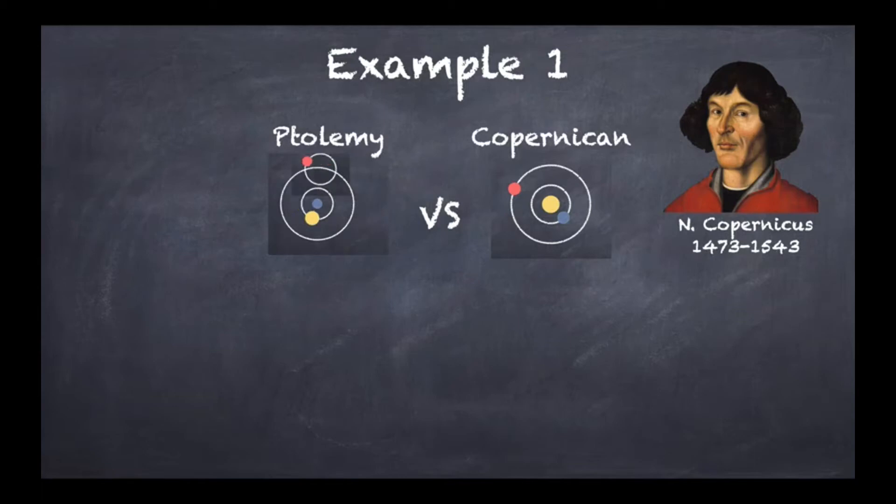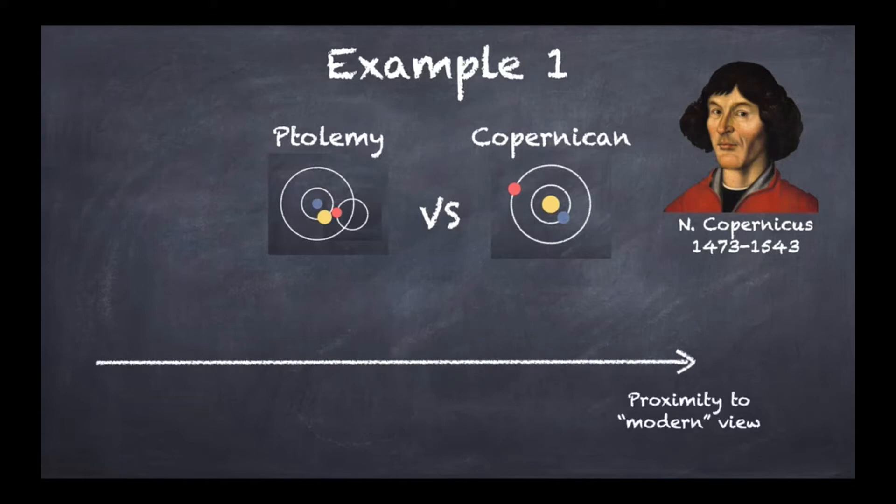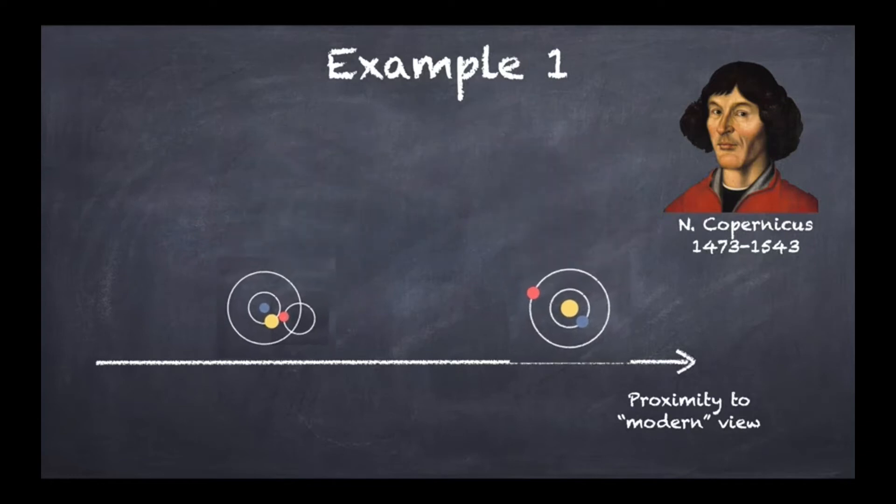The Ptolemaic view was that the Earth was sitting at the center of the universe, and then you would have the sun orbiting around the Earth, and then Mars, for example, would be orbiting along a small circle, and the small circle itself would be orbiting the Earth. If you were to draw an x-axis that means the proximity to modern view, then you would rank these two views roughly about there.